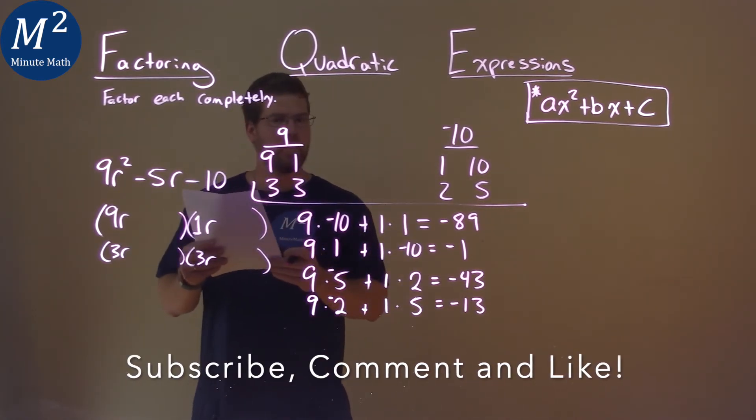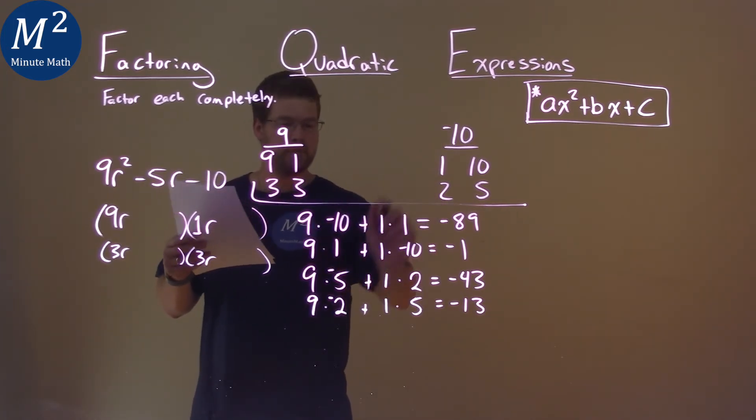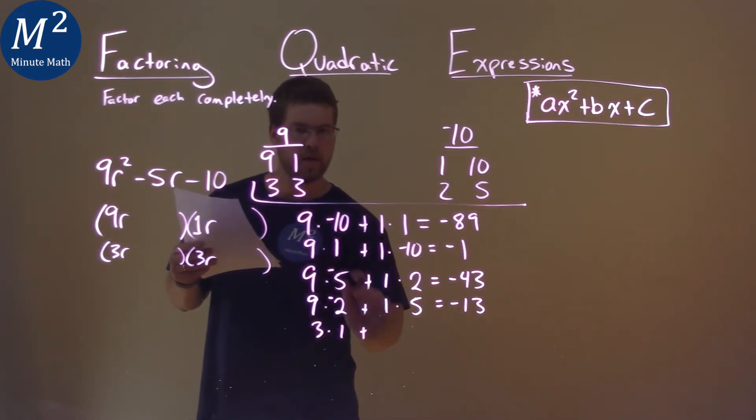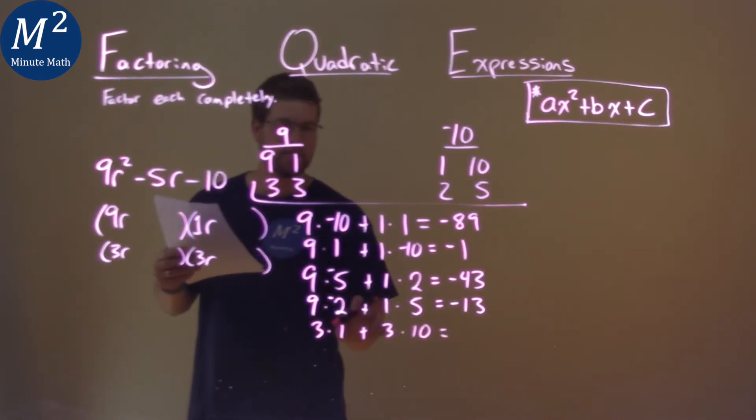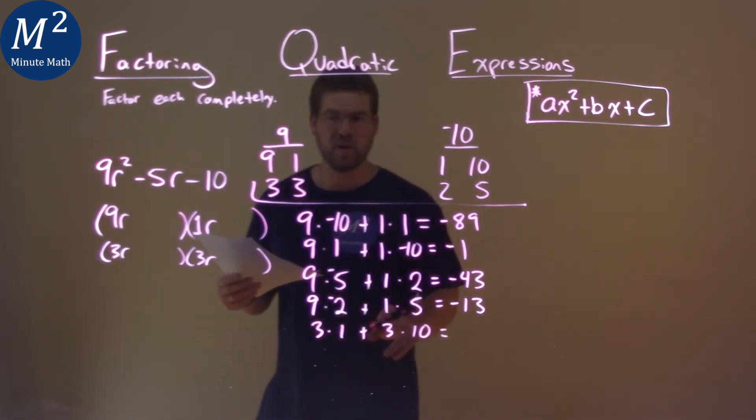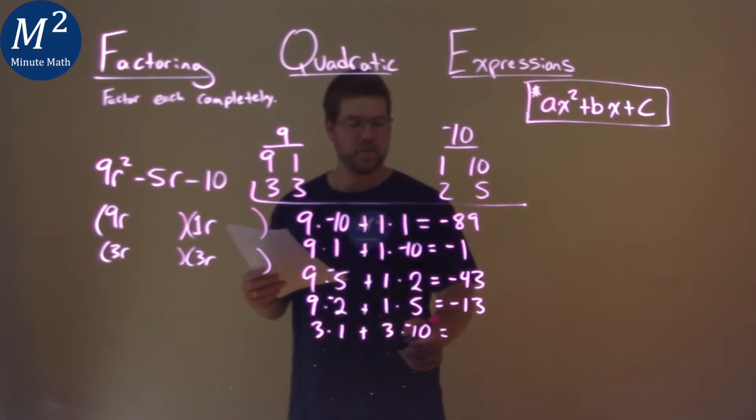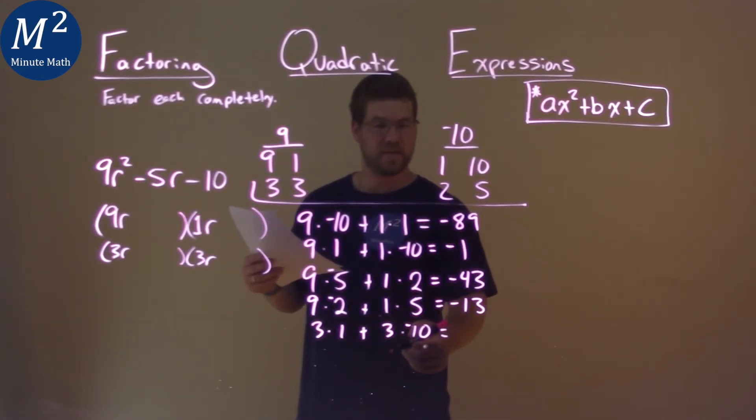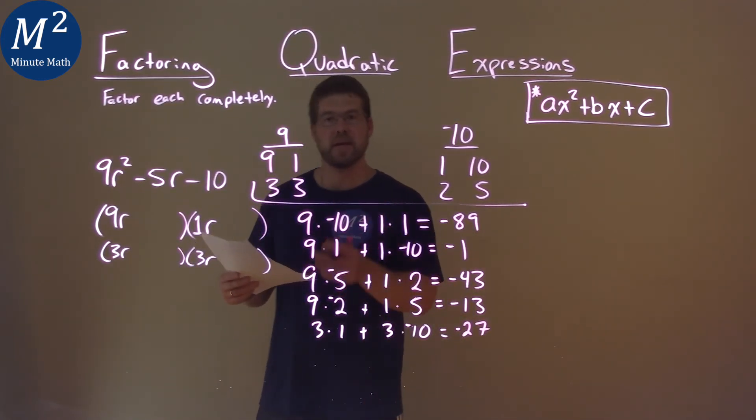3 here times the first ones: 3×1 + 3×10, and since they're the same a values, we don't need to flip them around, but the larger one has to be negative. 3×1 + 3×(-10), well 3×(-10) is -30, plus 3 is -27, again not equal to -5.